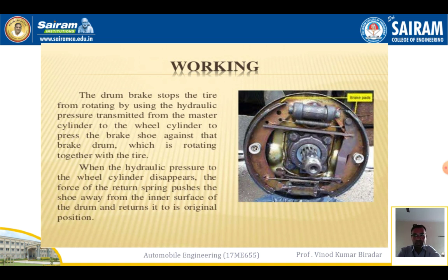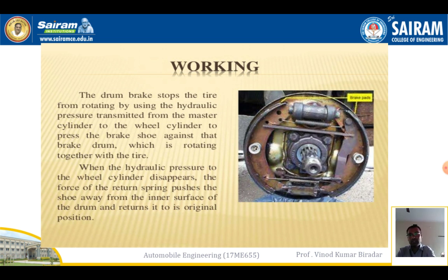To summarize the working: when the pedal is pressed, working fluid is distributed towards the slave cylinder. In the slave cylinder, the two pistons are moved opposite to each other. Due to this, friction is generated, which acts on the wheel — the tire is tightly gripped — and at this point the whole vehicle is stopped. That is the working of the drum brake.